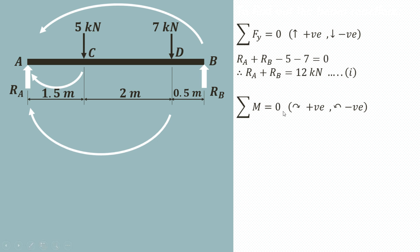The second condition of equilibrium is summation of moments equal to zero. Clockwise moments are considered positive and anticlockwise moments are negative. Taking moments about point A: the reaction RB produces an anticlockwise moment towards A, so it is negative. The perpendicular distance between B and A is 4 meter, giving minus RB multiplied by 4.